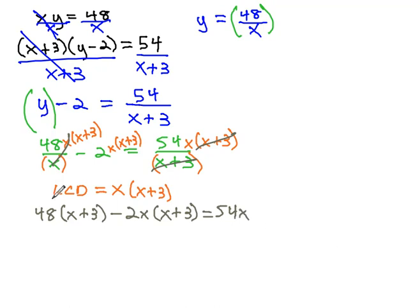We now have an equation we can solve. We'll start by distributing. Forty-eight x plus three times forty-eight is 144, minus two x squared, minus six x, equals fifty-four x.